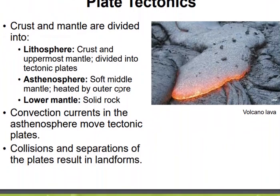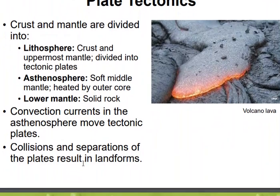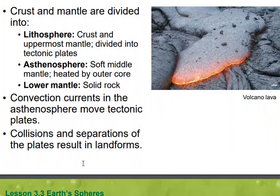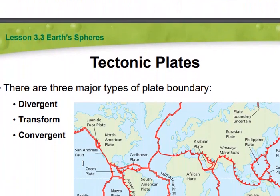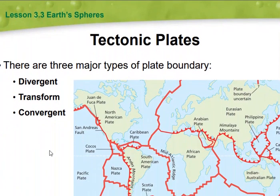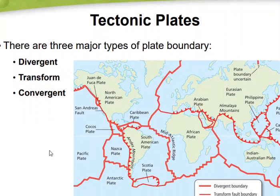Convection currents in the asthenosphere move tectonic plates, and collisions and separations of the plates result in landforms — that's how we get our trenches and our mountains. There are three major types of plate boundaries: divergent, transform, and convergent. I'm going to go over those three here.